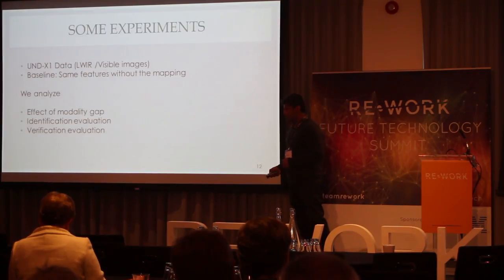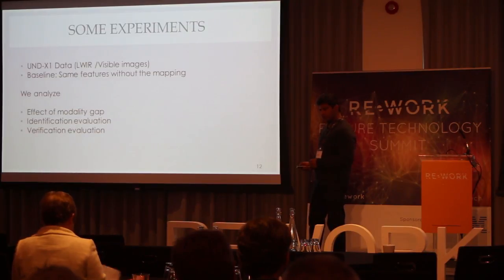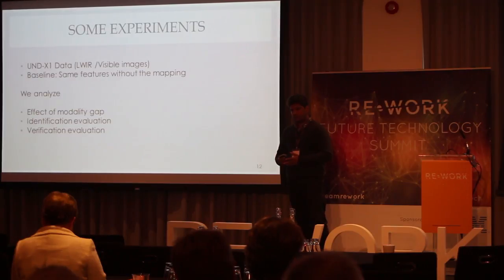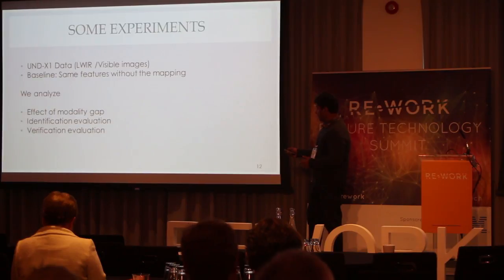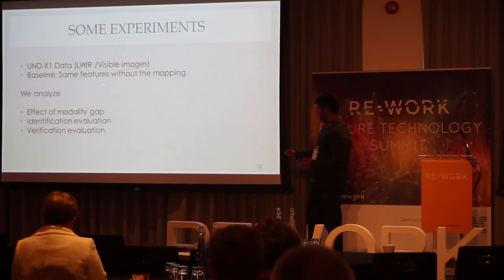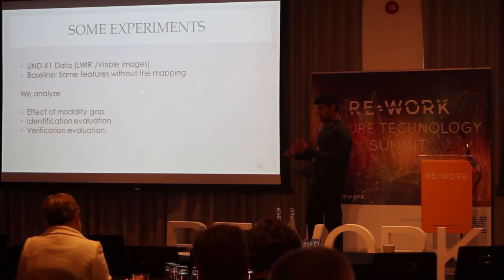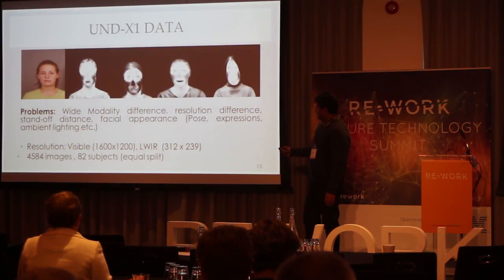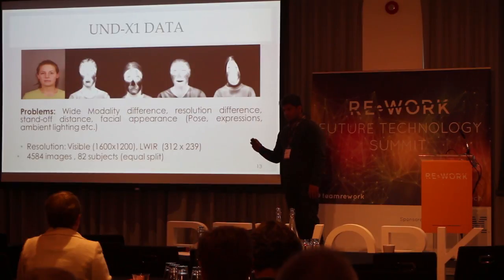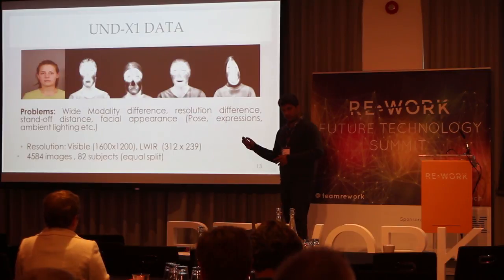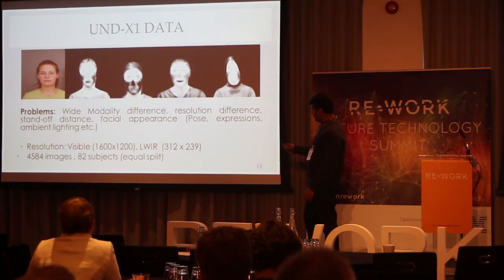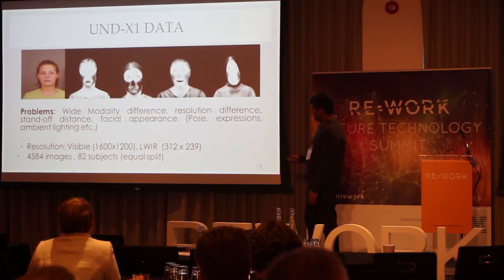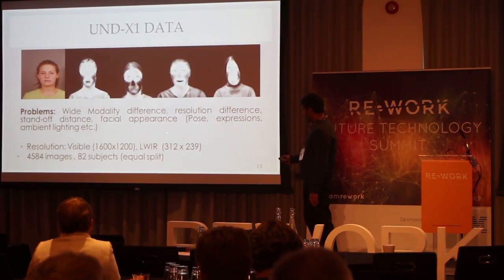For experiments, we use the dataset from University of Notre Dame. It contains both visible and far-infrared thermal images of the same persons across multiple subjects. To compare, we also use the same features but without our learned mapping, to show how effective the mapping was. This dataset is really challenging because it was recorded back in 2003 with long-wave IR sensors at a distance of 2 to 4 meters in different settings. The thermal images have different expressions, different distances, and were taken at different times, making it a very hard problem with wide modality and resolution differences.